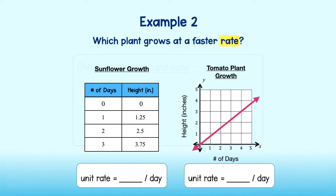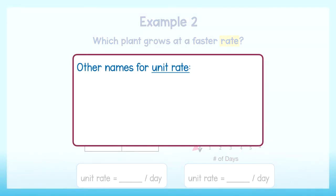We learned a couple of different names for unit rate. Rate of change, constant rate of change, and slope. Yes, slope. If we can figure out the slope of both sets of data, then we can answer the question.